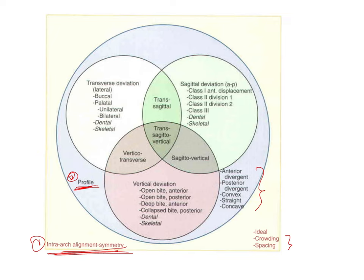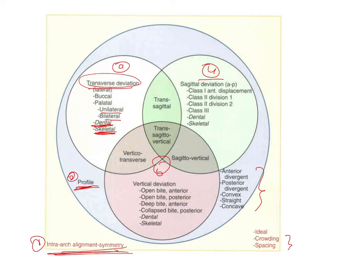They also considered the other planes of space — transverse and vertical — in addition to the sagittal seen in Angle's classification. Furthermore, they considered malocclusion in both dental and skeletal terms. For example, a posterior crossbite was evaluated as to whether it was unilateral or bilateral, and whether it resulted from dental or skeletal causes, making this a very comprehensive classification.